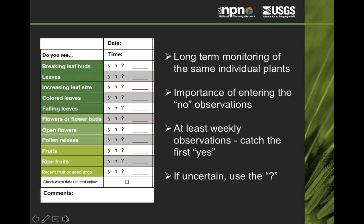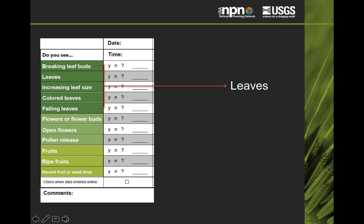We also have the ability for people to say they don't know. It's okay to say you don't know if you're not sure what you're looking at. You don't have to answer every phenophase — we'd rather people put a placeholder and tell us they don't know if they see breaking leaf buds, then go back and do more research instead of making a guess. In general, if you want to capture the broad phenophase categories for plants, you can just tell us whether or not you see leaves, open flowers, and fruits or ripe fruits. Those are the easiest things to observe, and we have detailed protocols that tell you exactly what to look for.